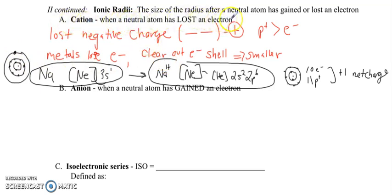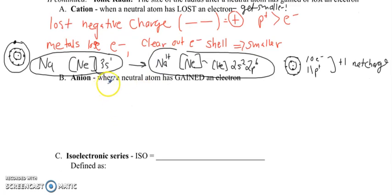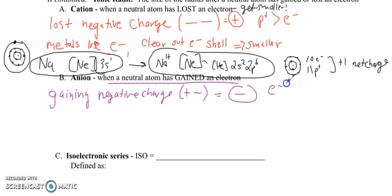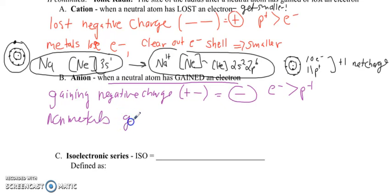So cations — when a neutral atom loses an electron — get smaller, because we're clearing out an electron shell, a whole energy level, and dropping down to a lower configuration. Anions form when a neutral atom has gained an electron, gaining a negative charge. In math class, adding a negative gives you a negative. This time, the electrons outnumber the protons. This applies to non-metals, which gain electrons to fill an electron shell.